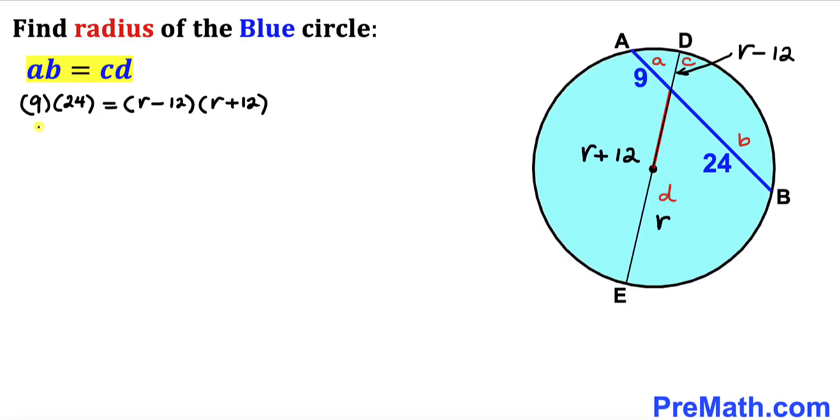Now let's multiply on the left hand side. We get 216 equals, and now let's recall this famous identity: A minus B times A plus B equals A squared minus B squared. Let me call this our A and this our B. Then the right hand side can be written as r squared minus 12 squared, which is 144.